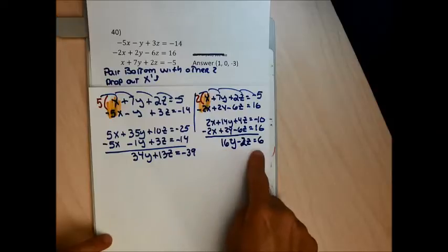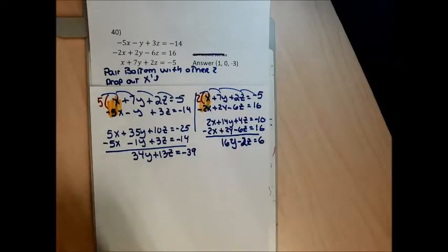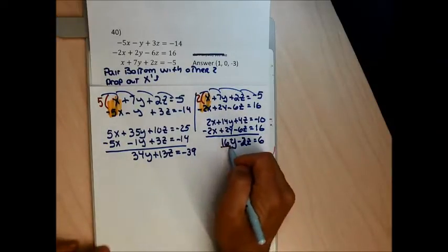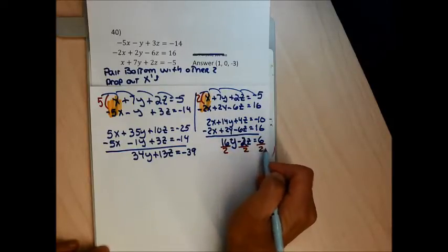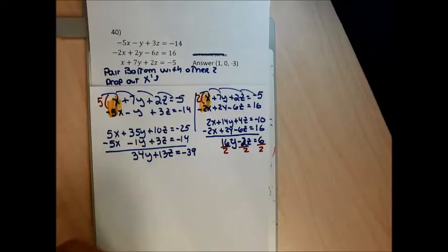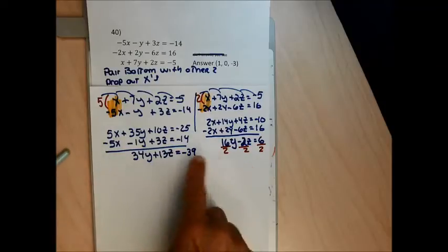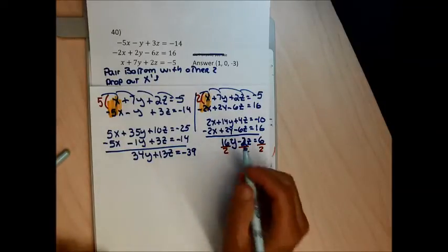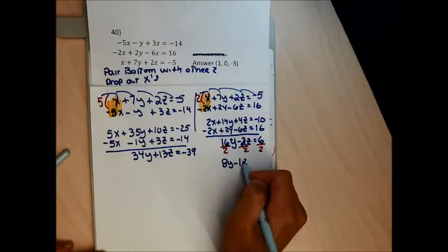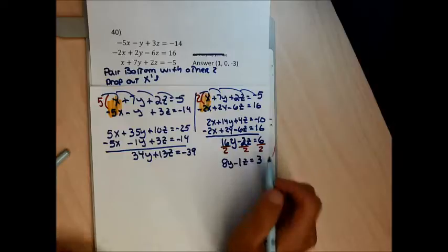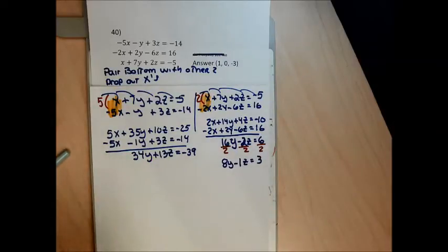For the second set, I'll multiply the bottom by 2 to get 2x plus 14y plus 4z equals negative 10, then add the middle equation: negative 2x plus 2y minus 6z equals 16. Adding gives 16y minus 2z equals 6. Since all coefficients are even, I'll divide by 2 to simplify: 8y minus z equals 3. This keeps the numbers smaller and makes the next step easier.